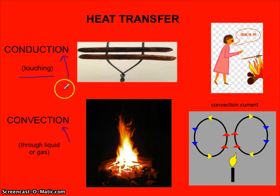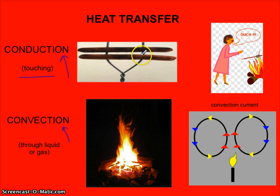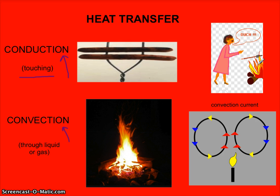Now, one thing you have to have for heat transfer is objects at two different temperatures. For example, we have hot dogs here on a coat hanger. The hot dogs probably came out of the fridge, but that won't matter as much because you're going to stick them over the fire. The fire is where you have the different temperatures, and the transfer goes from the fire to the hot dogs through the metal coat hanger.